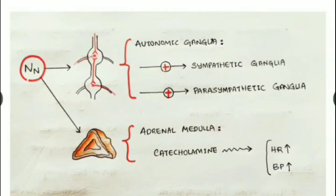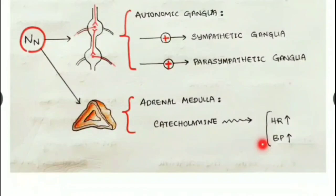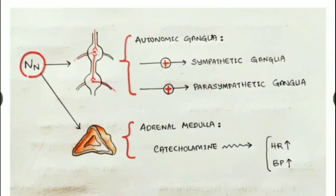NN receptors are chiefly located at autonomic ganglia and also at the adrenal medulla. Stimulating NN receptors by acetylcholine in the autonomic ganglia stimulates the sympathetic ganglia and also activates the parasympathetic ganglia. Acetylcholine's action at the adrenal medulla causes release of catecholamines, resulting in tachycardia and increased blood pressure.